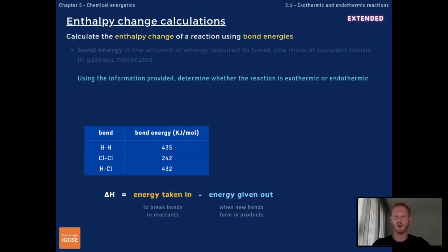So using the information provided, determine whether the formation of hydrogen chloride from its elements is exothermic or endothermic. The equation for this reaction, H2 plus Cl2 forms 2HCl, can also be written as a displayed formula which helps us to identify the type and number of bonds.